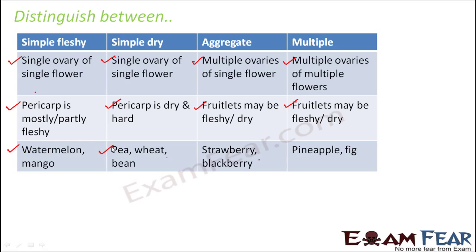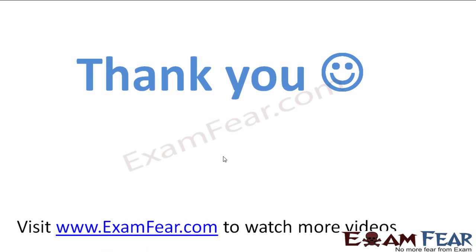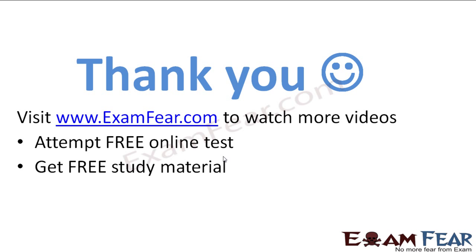Examples: aggregate fruits — strawberry, blackberry; multiple fruits — pineapple, fig. This is an overview of the different types of fruits based on their structure. Please visit examfew.com to watch more videos, attempt free online tests, get free study material, and find tutors and mentors. Thank you.